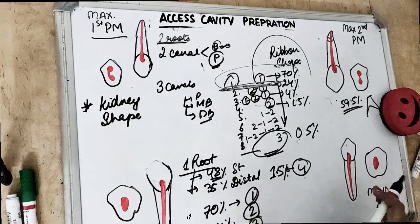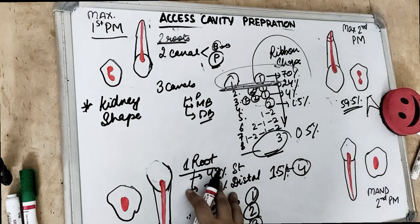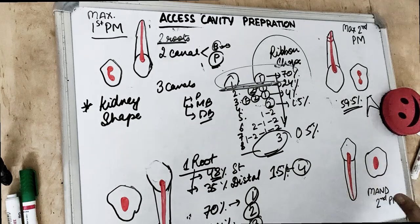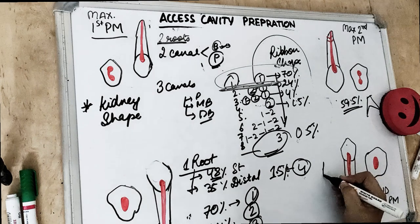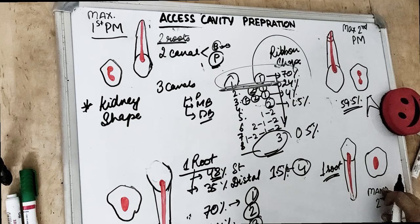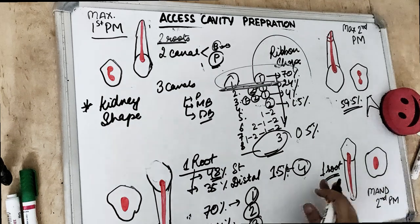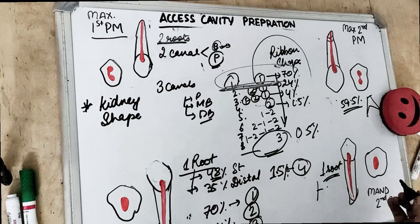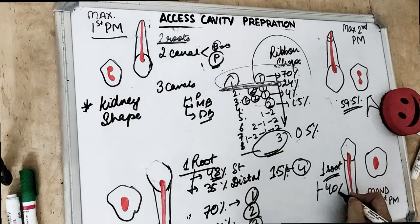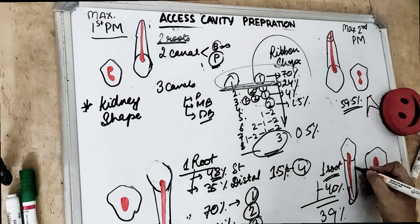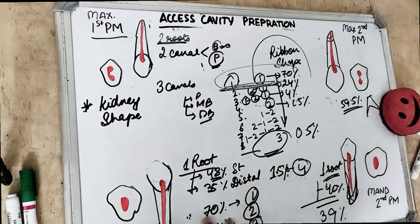Coming to the mandibular second premolar — this is similar to the mandibular first premolar except the lingual pulp horns are more prominent. Usually there is one root, but again there may be a bifurcation seen at the apical third of the root. This one root most of the time has a distal inclination. For the second premolar, distal inclination is seen in 40% of cases and straight line in 39%.